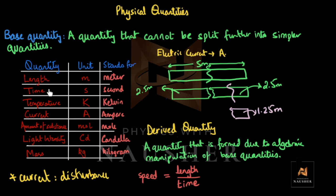Speed is derived because I picked two base quantities and divided them. The unit of speed: length's unit is meter, time's unit is second, so speed is meters per second. You can also write it as ms⁻¹, because s is in the denominator and when brought to the numerator it becomes s raised to power minus 1.